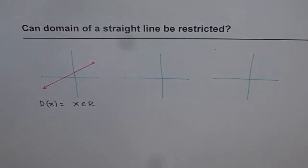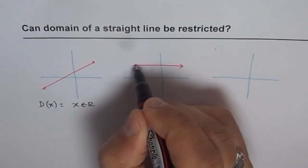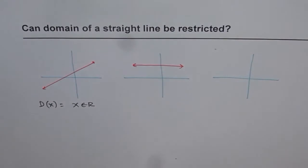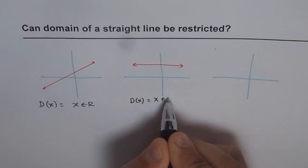We could have a slanting line or we could have a horizontal line like this, right? So in this case also we have domain as x belongs to real numbers.